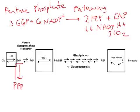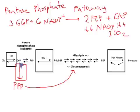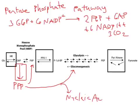We have a new flux control step right here for entering the PPP. A shunt is just another path — another way of pushing things through the pathway. If you look at the full balanced equation, we have three glucose 6-phosphates from the hexose monophosphate pool, plus six NADPs, from two fructose 6-phosphates, plus one glyceraldehyde 3-phosphate, which is down here in glycolysis, six NADPHs, and three CO2s. We can take some of this to make nucleic acids.